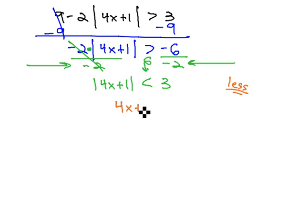We put the 4x plus 1, what is inside the inequality, between our two values, negative 3 and positive 3, the negative and positive of the number we're working with.